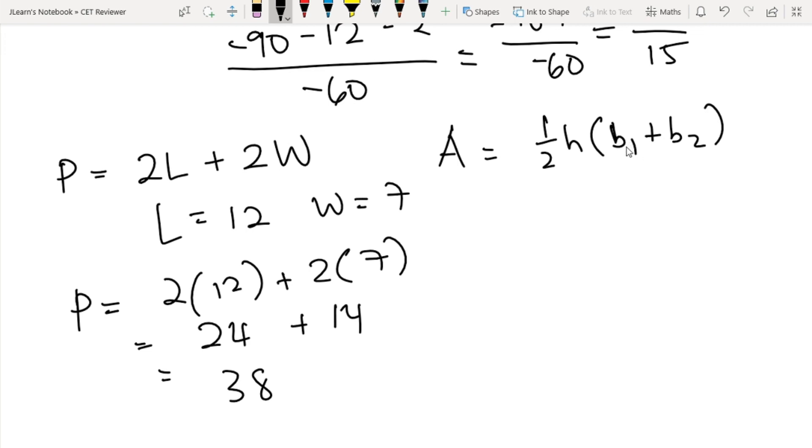If b₁ is equal to 15, b₂ is equal to 20, and the height is equal to 12, what is now the area of the trapezoid? I will leave this question to you. Leave your answers in the comments down below.